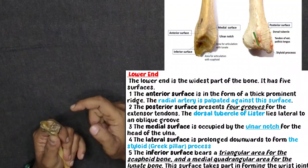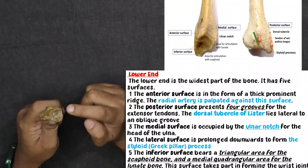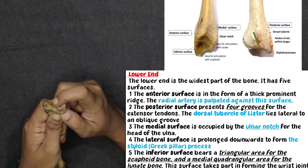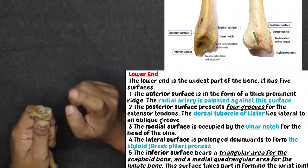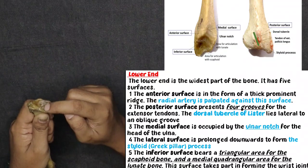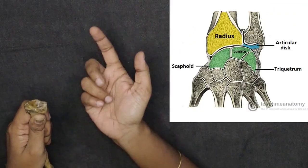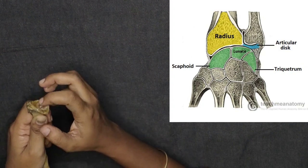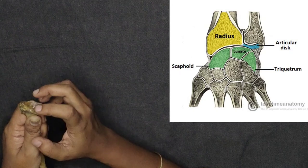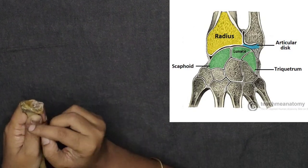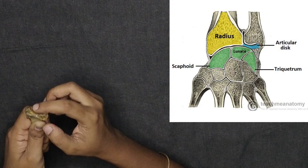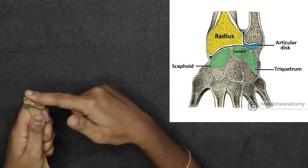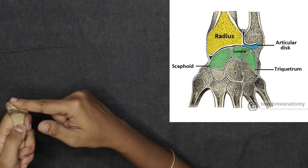The inferior surface of the lower end has two impressions: on the medial side there is a quadrangular impression for the lunate bone, and on the lateral side there is a triangular impression for the scaphoid bone. At the wrist joint, both the lunate and scaphoid bones articulate with the inferior surface of the radius.